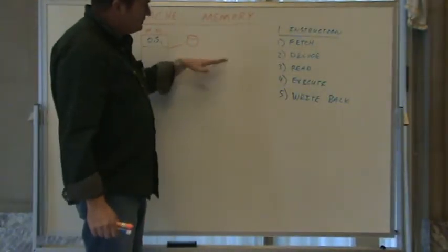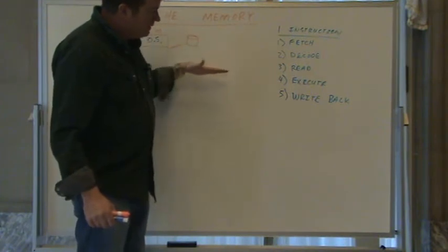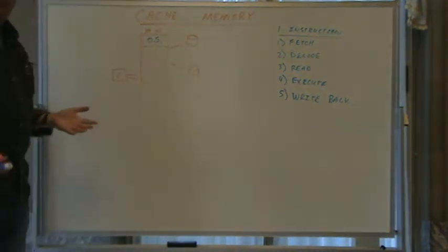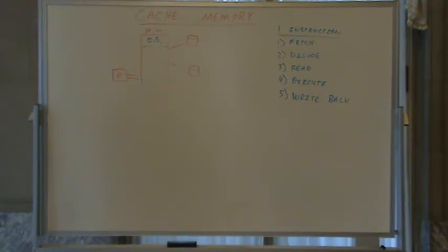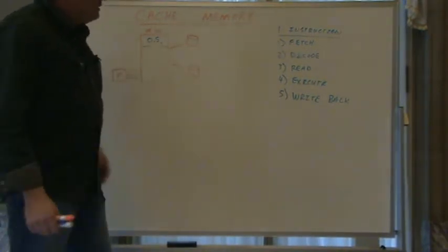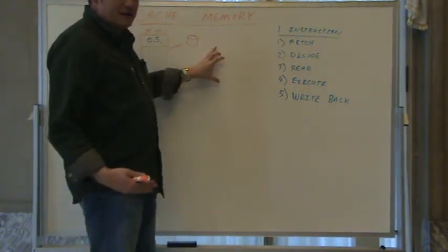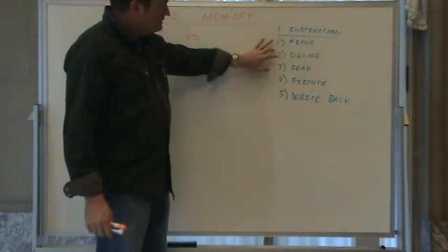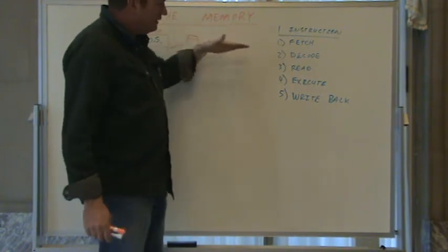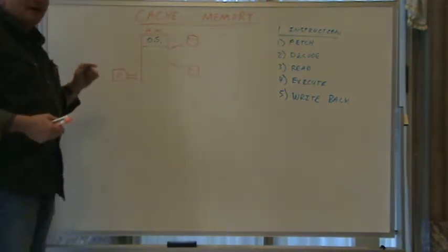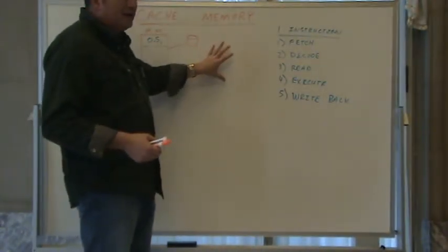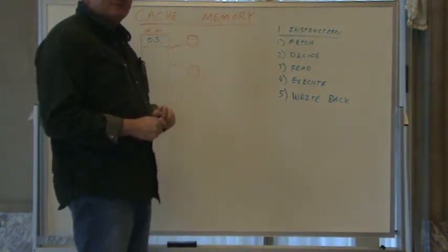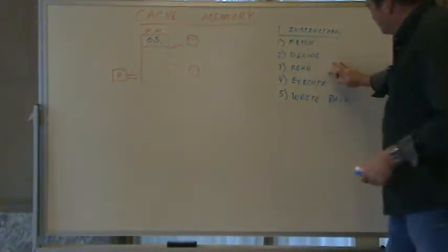The clock runs at a certain speed, but all of these steps don't necessarily take the same amount of time. We want the computer to run as fast as possible, but the clock must give enough time for the slowest step to complete. So the fastest speed we can set the clock to is determined by whichever step takes the longest.